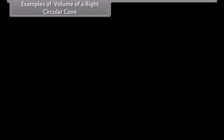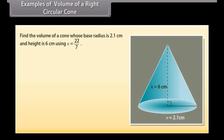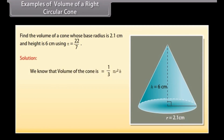Find the volume of a cone whose base radius is 2.1 cm and height is 6 cm, using π = 22/7. The volume of the cone is V = (1/3) × π × R² × H = (1/3) × (22/7) × (2.1)² × 6, which equals 27.72 cm³.